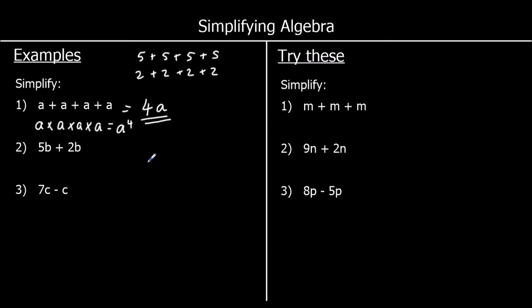Question 2: we've got 5b plus 2b — 5 lots of a number plus 2 lots of a number makes 7 lots of that number. If b was 10, then 5 tens is 50 and 2 tens is 20, and that makes 70 — 7 lots of 10. So 5b plus 2b equals 7b.